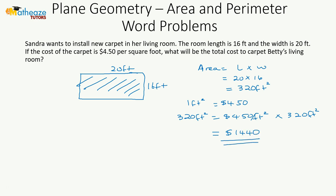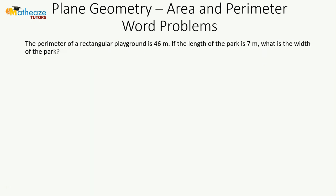Here we're told that the perimeter of a rectangular playground is 46 meters. The length of the park is 7 meters. Perimeter is 46 meters. What is the width of the park?